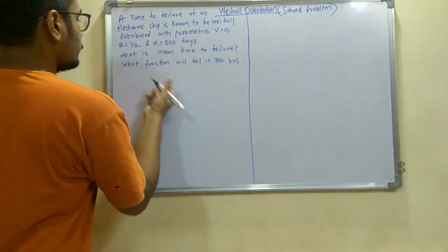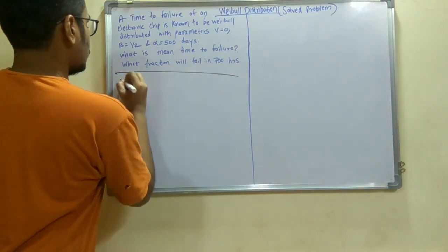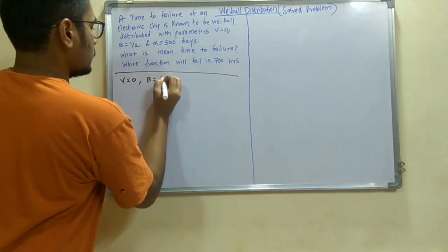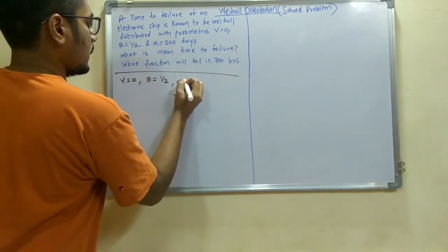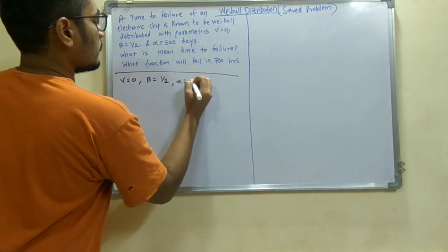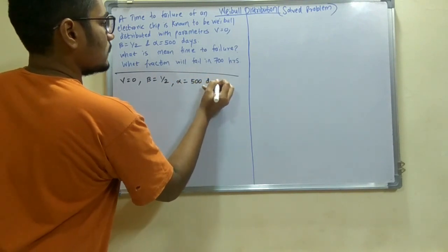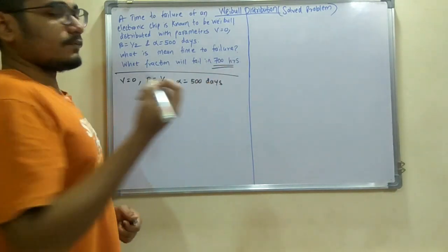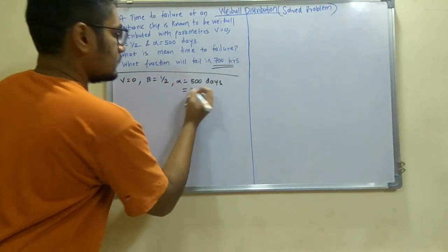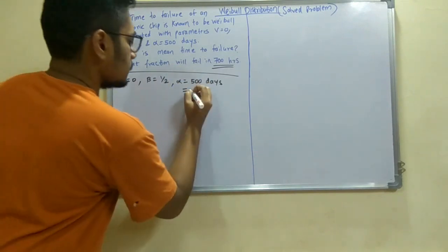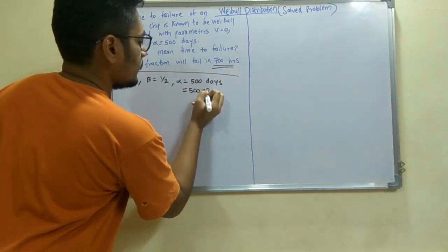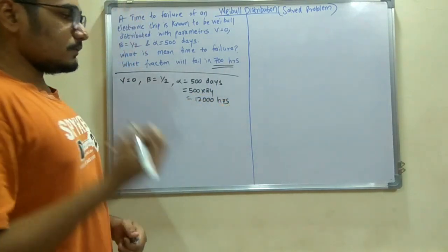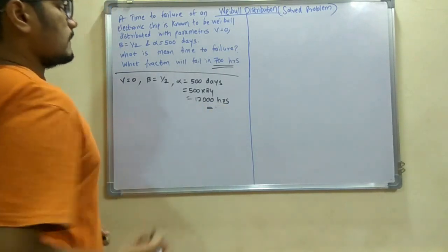So as you can see you have these parameters: v equals 0, that is the location parameter; then you have beta, that is the shape parameter; and alpha, that is the scale parameter, 500 days. Since in the question itself they have asked for 700 hours, we will be converting this 500 days to hours. So since one day has 24 hours, 500 into 24 will lead to 12,000 hours.